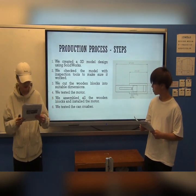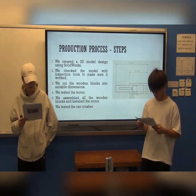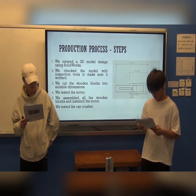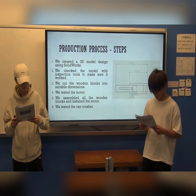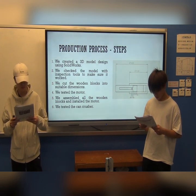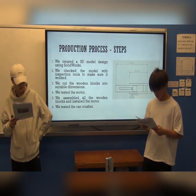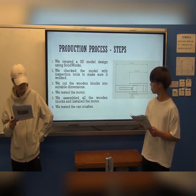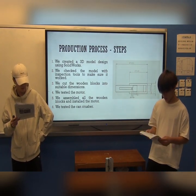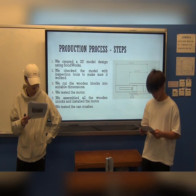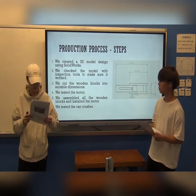For the production steps: first, we created a 3D model design using SolidWorks. Second, we checked the model with inspection tools to make sure it works. Next, we cut the wooden rods into suitable dimensions. Then we tested the model. After that, we assembled all the wooden rods and installed the model. Finally, we tested the crank version.